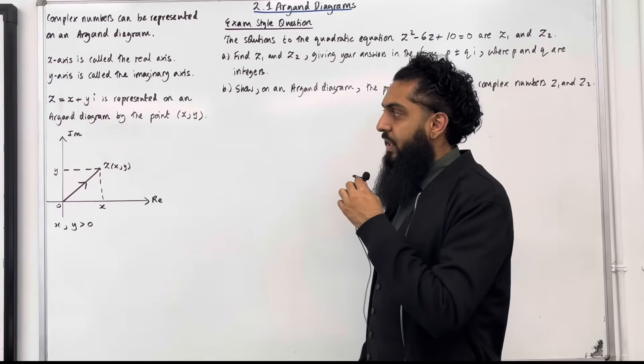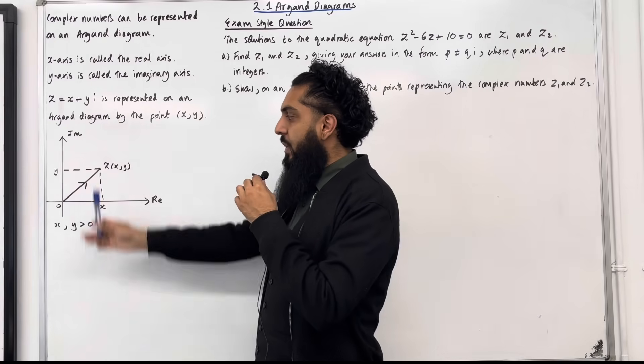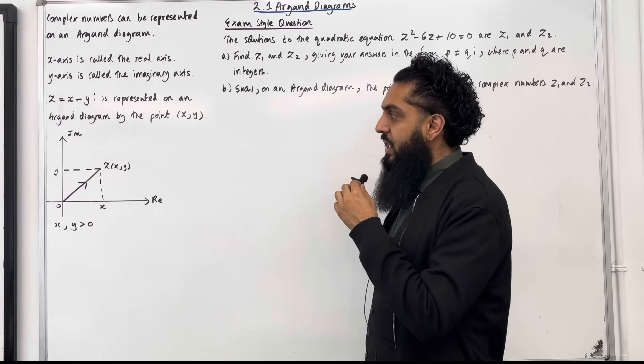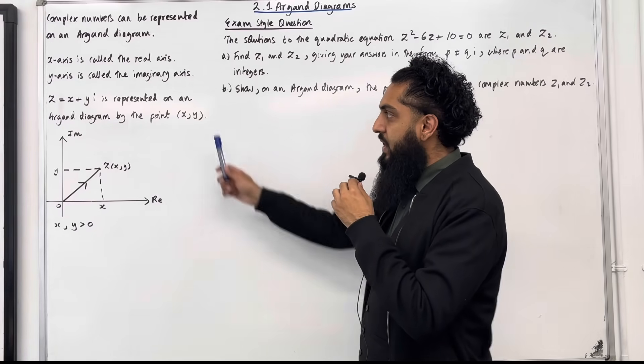Consider a complex number z equals x plus yi for some constants x and y greater than 0. This complex number z can be represented on an Argand diagram by the point (x, y).